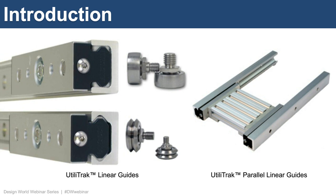Guide wheel-based linear bearings with crowned running surfaces are designed to accommodate misalignments in parallel configurations of linear guide rails and can be quickly assembled onto less accurately prepared mounting structures without binding. Several mounting orientations are possible and new product additions provide flexibility for a variety of equipment applications. This webinar also introduces a new addition to the Utilitrack product line: the V-crown hybrid wheel design for flexible use on both V and open track profiles.